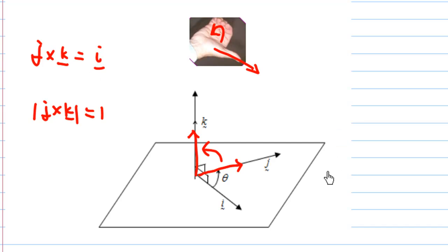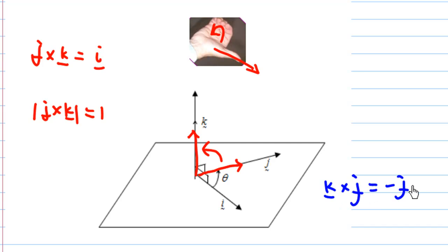How about k cross j? k cross j is the negative of j cross k. Since j cross k is i, k cross j equals negative i.